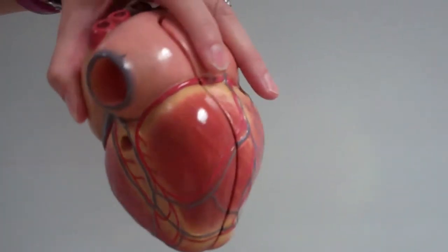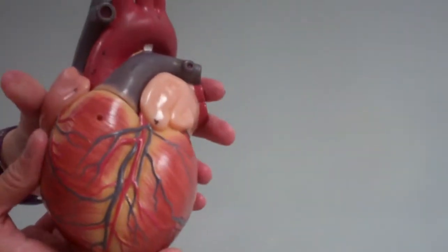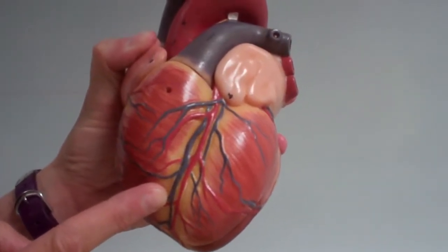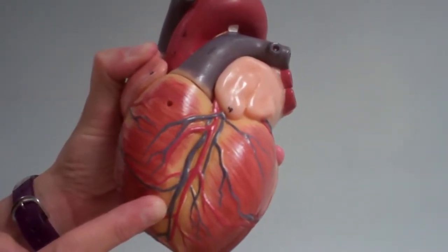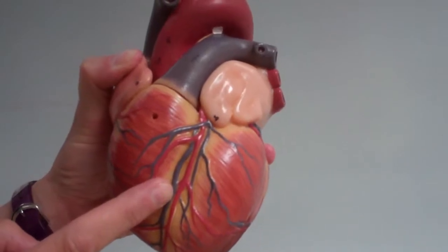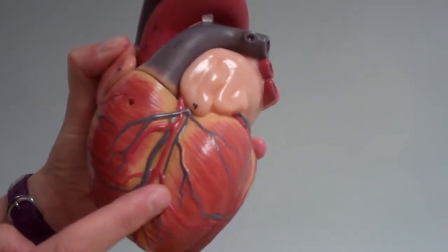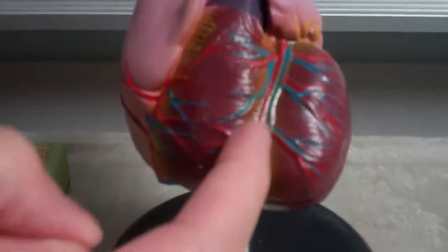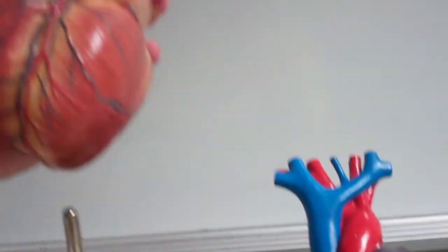Those are the three arteries you're expected to know. For the veins, the major vein here in the anterior interventricular sulcus is going to be our great cardiac vein. This model shows one nice blue vein - that would be the great cardiac vein.